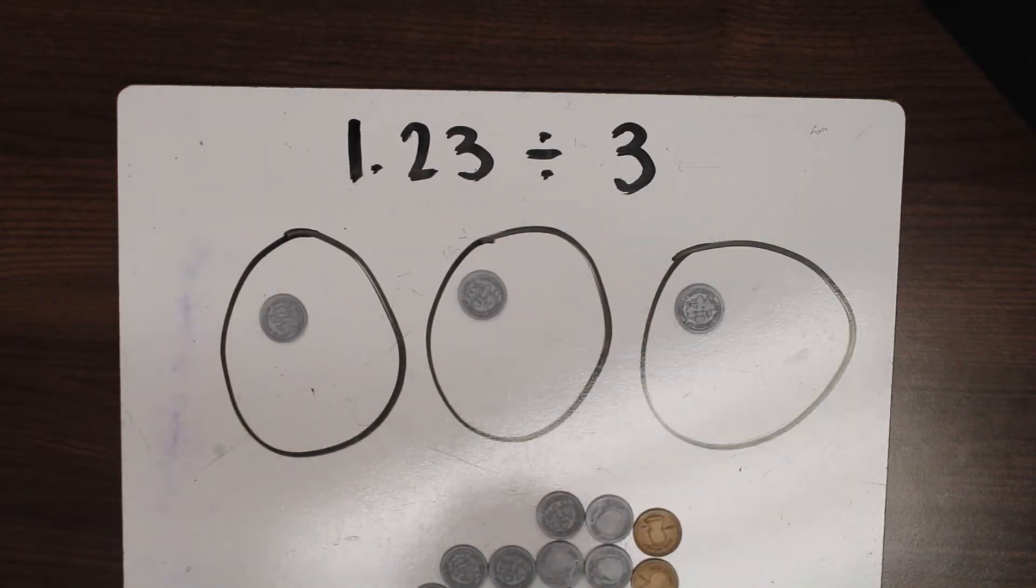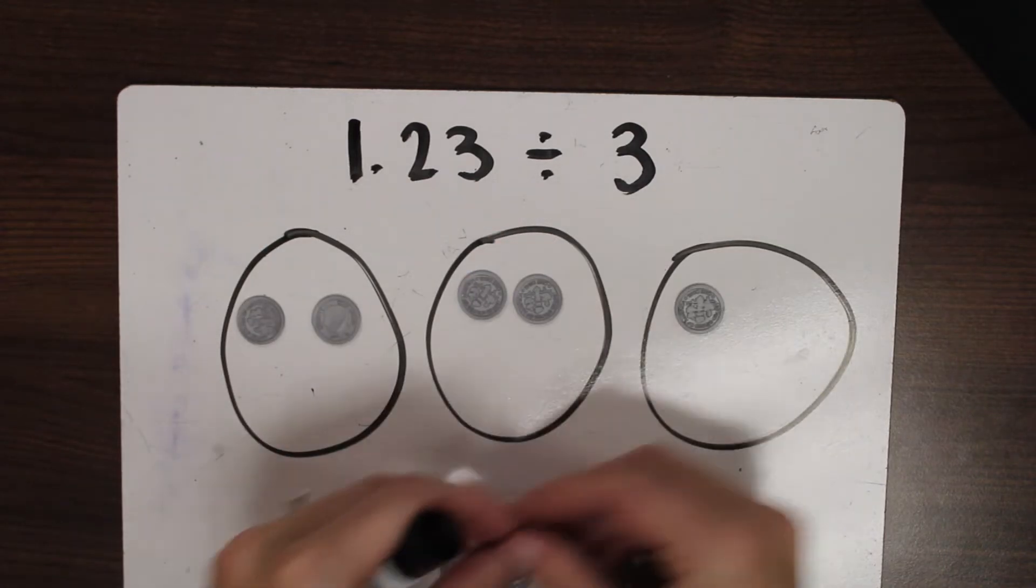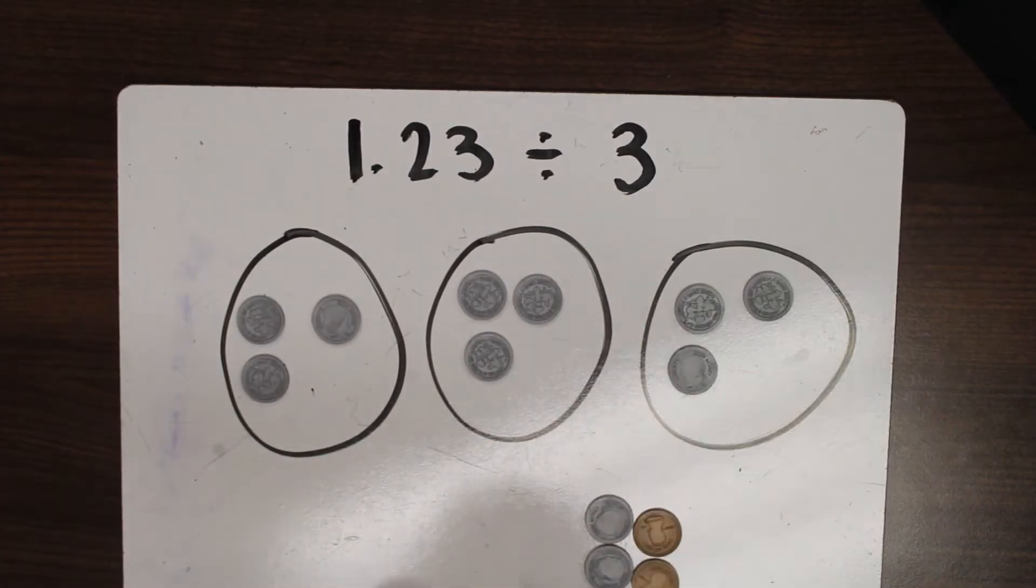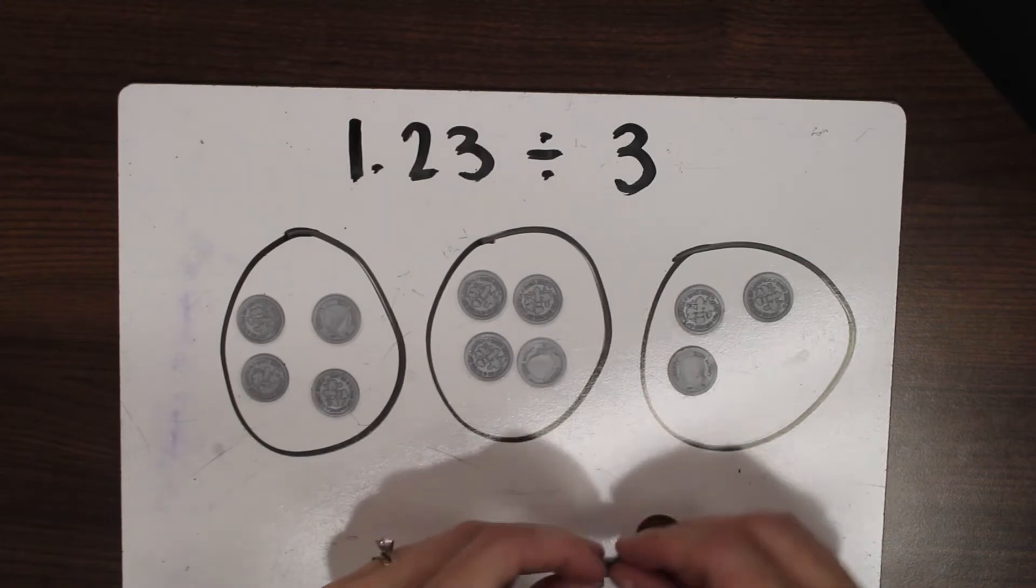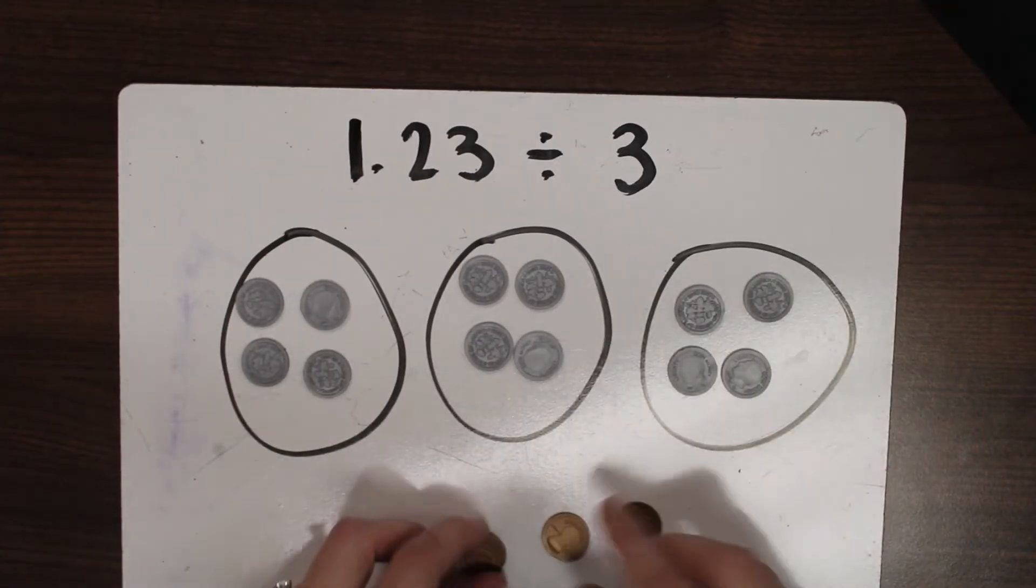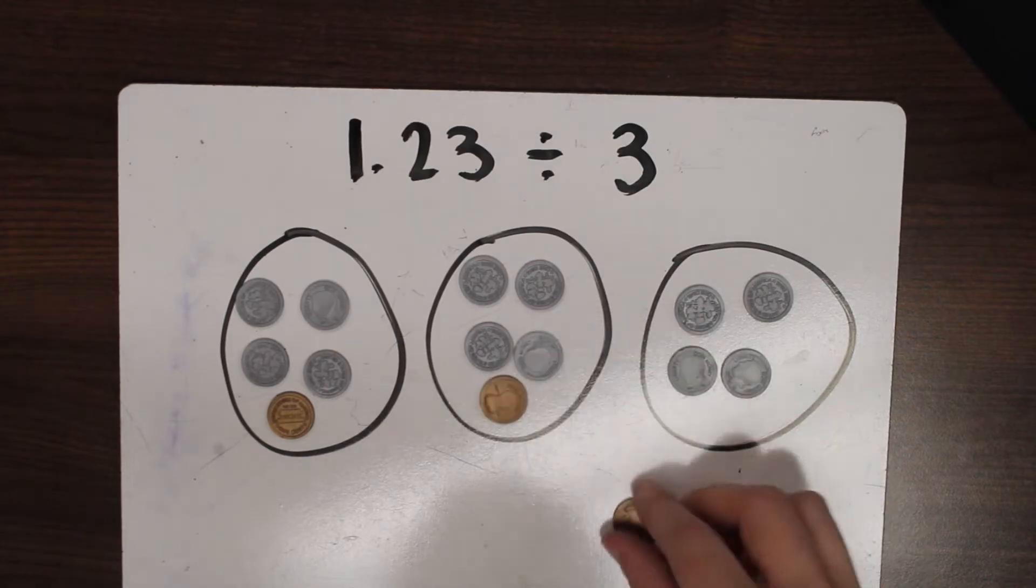I'm going to draw three groups for myself and start splitting it. So I'll take dime, dime, dime. It's 10 cents each. Dime, dime, dime. That's more dimes I can split up. Dime, dime, dime. Oh, how handy. Three more dimes. So the dimes all split evenly and now I have these three pennies. I have three groups, so each group will get a penny too.